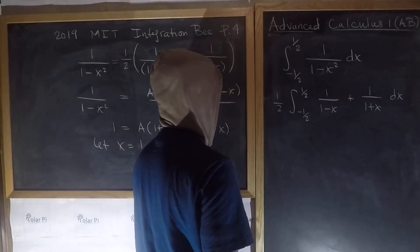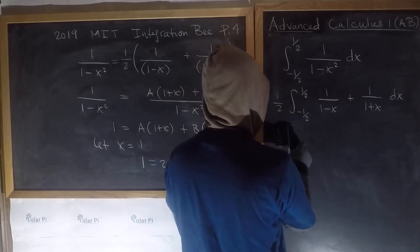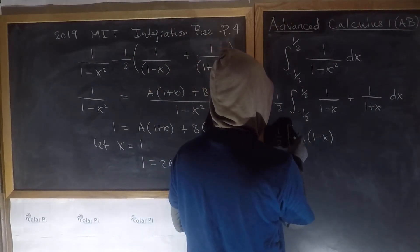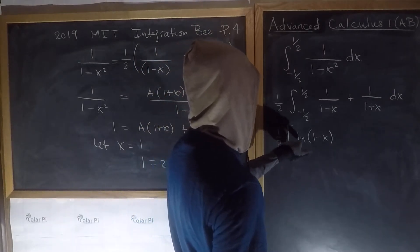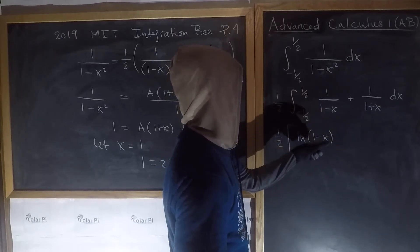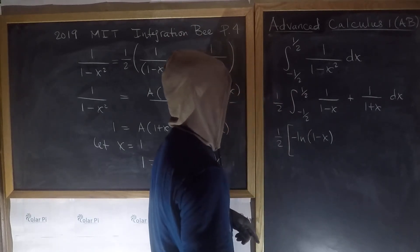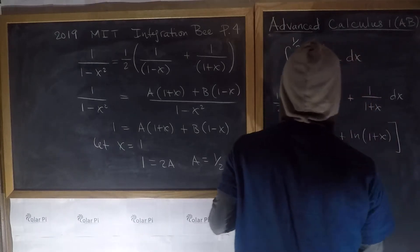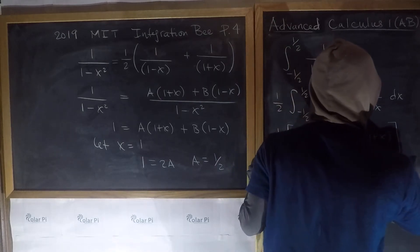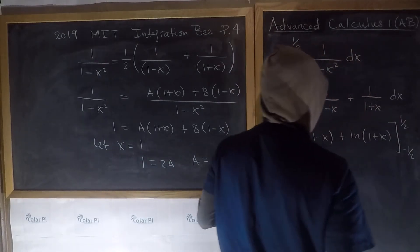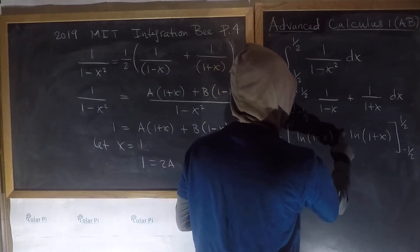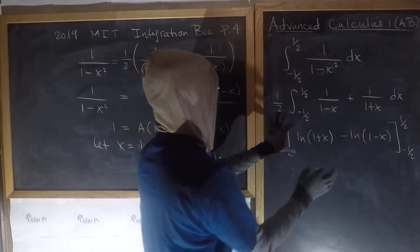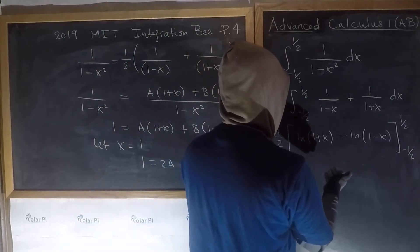Integrating, we get one half times: negative ln|1 minus x| plus ln|1 plus x|. The negative sign on the first log is required because by the chain rule, the derivative of ln(1 minus x) gives a factor of negative one, so we compensate with a minus sign. We evaluate this from negative one half to positive one half. Rearranging, swapping the order of the two parts, we get ln(1 plus x) minus ln(1 minus x).